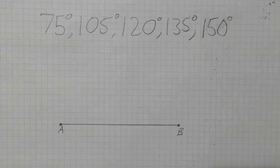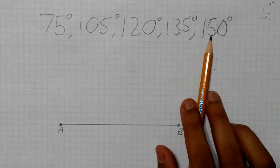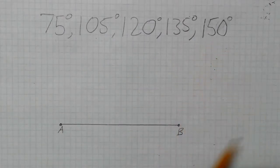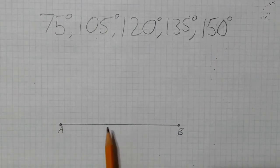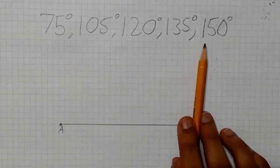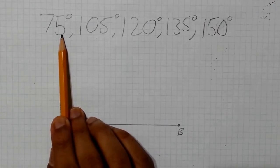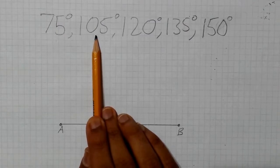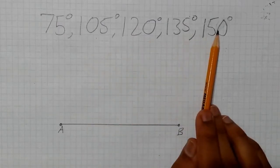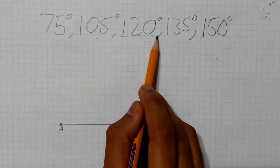Other angles can also be created, such as 75, 105, 120, 135, and 150 degree angles. There aren't conventional methods of constructing these by themselves, but we can add up the earlier constructions to make some of these angles. To make a 75 degree angle, you can add a 30 degree angle to a 45 degree angle. To form a 105 degree angle, construct a 45 degree angle and add it to a 60 degree angle. And so on for the others. As an example, I'll construct a 120 degree angle.